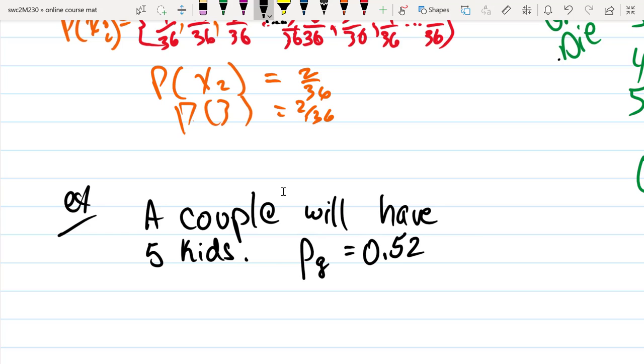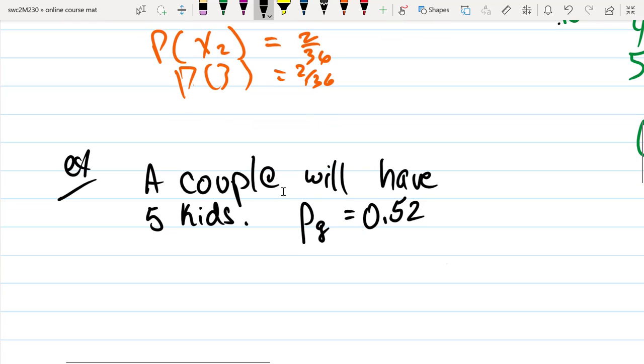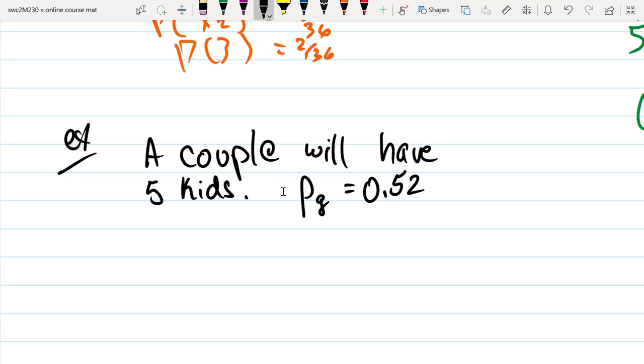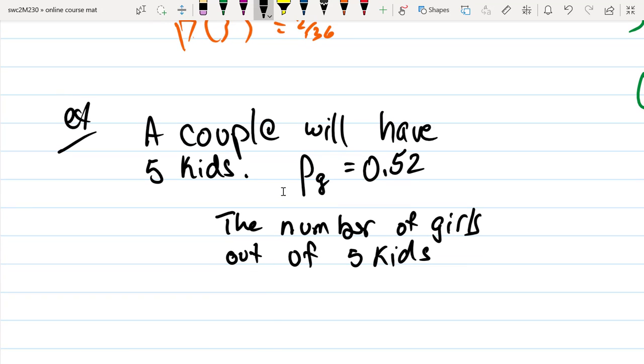We're interested in discussing how many of those kids will be girls. The probability of having a girl, let's say, is 0.52. How many girls they will have out of those five is a random event. So we're interested in the number of girls out of five kids.